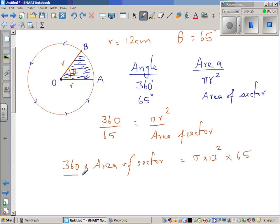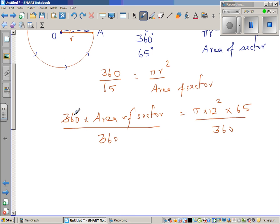So I'm going to divide this side by 360, I'm also going to divide this side by 360. This and this gets cancelled, so area of sector or the required sector is π times 144, 12 squared is 144, times 65 divided by 360.